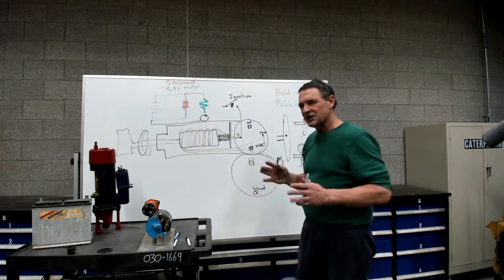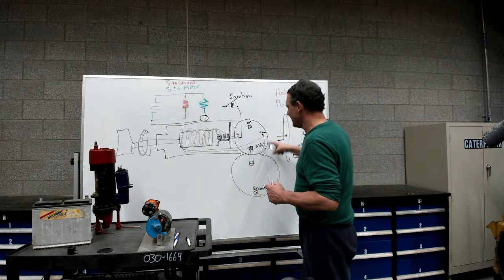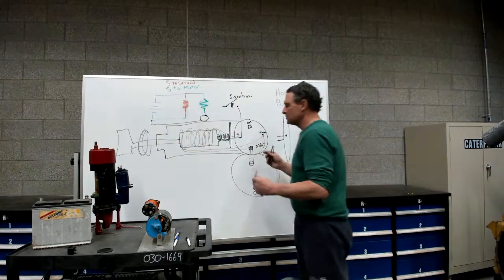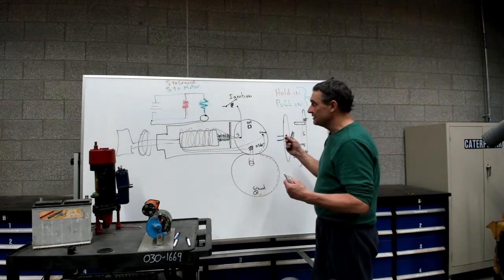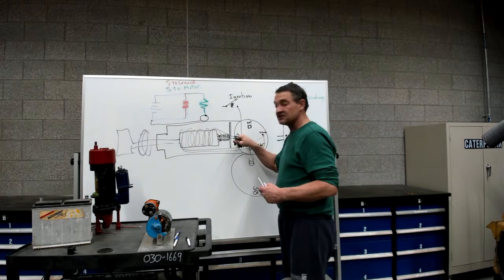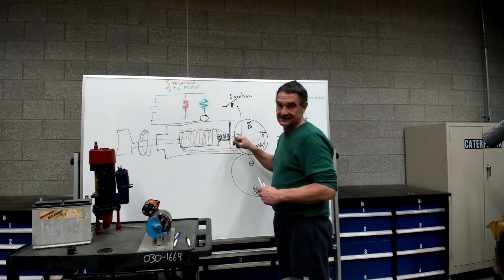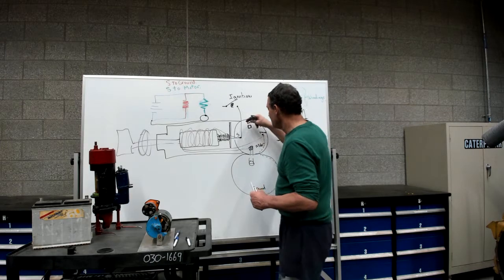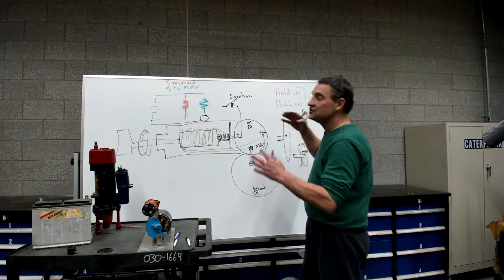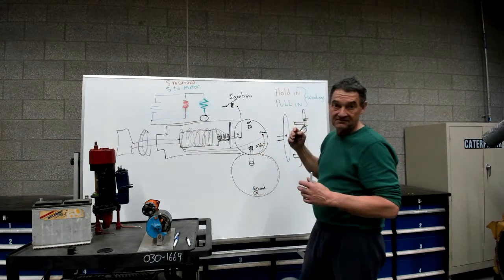When we're checking this solenoid, this is what we have. We have a solenoid, we don't see any of this, and we're trying to figure out where to put our ohm meter. Simply, everything starts at the S terminal. The S terminal to the ground is your hold-in windings. Those are the light ones.